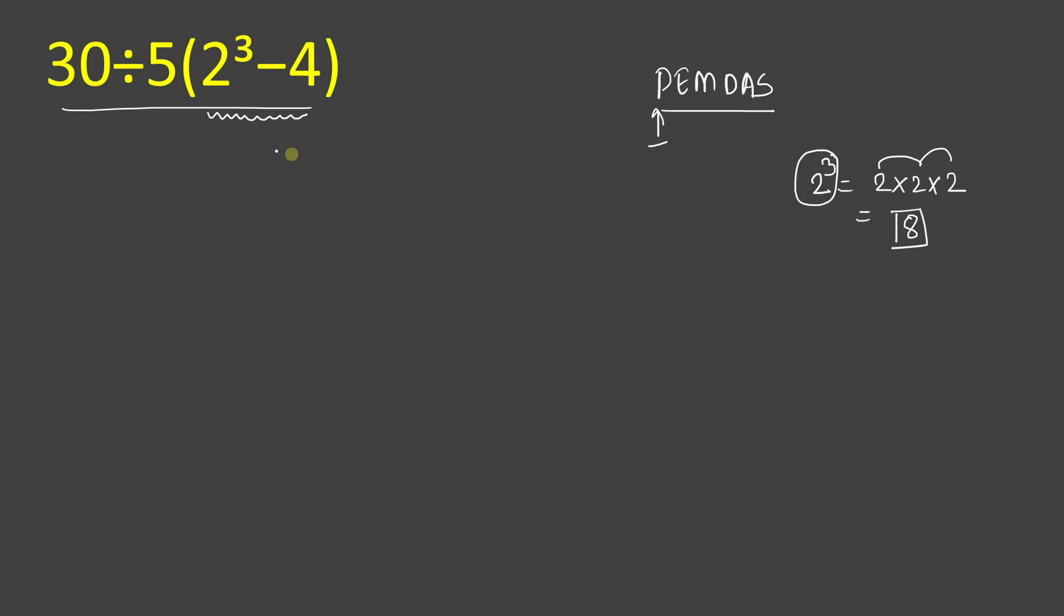Here we will write in a simple form: 30 divided by 5, 8 minus 4. Here 8 is substituted in the place of 2 power 3.